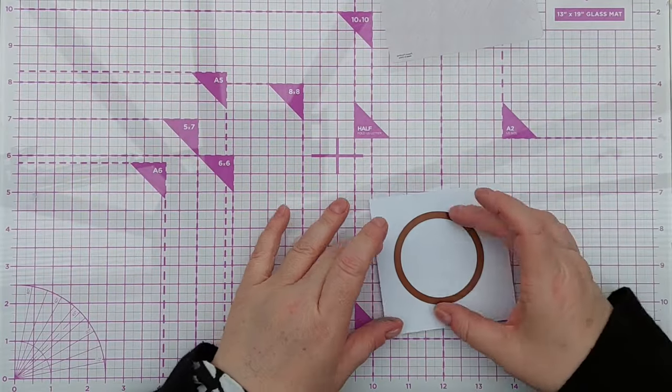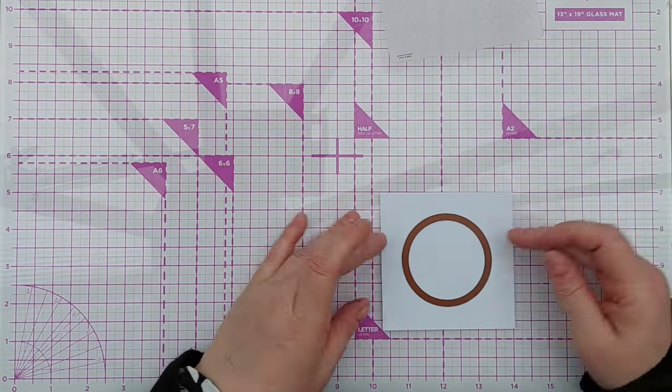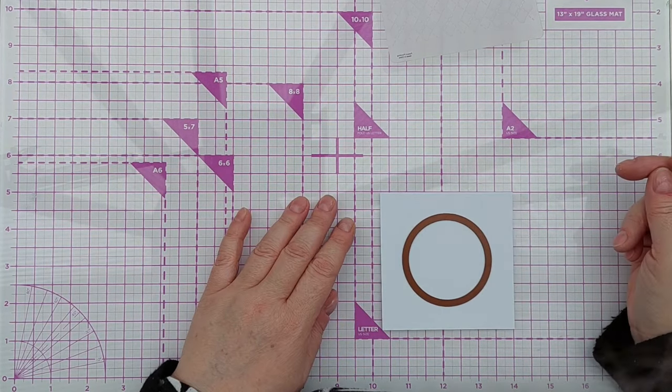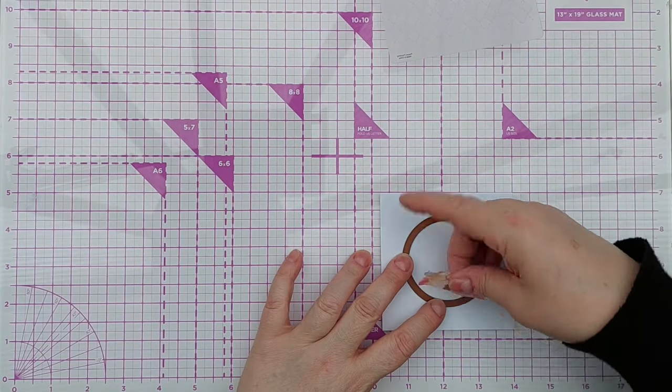First things first, I took a square of smooth white cardstock and die cut a circle from the center. This gave me a panel to emboss and an aperture for my focal point.